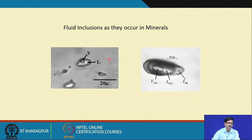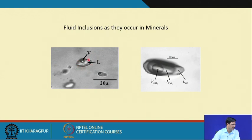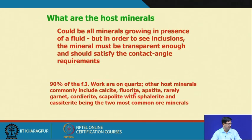Here are some photographs of fluid inclusions as observed in host minerals. This is an example of an aqueous biphase inclusion where vapor (V) and liquid (L) are labeled. The micron bar is 20 microns, giving you an idea of the maximum dimension. A clearly demarcated inclusion wall shows the good optical contrast with the host grain. This second example shows a mixed inclusion containing water liquid, liquid CO₂, and CO₂ vapor. The significance of these inclusion types will be discussed further.